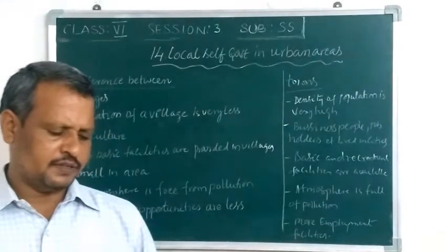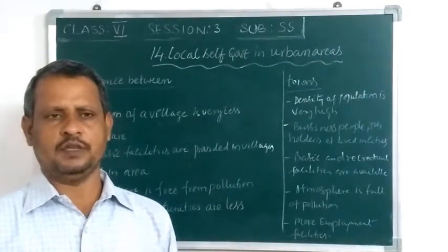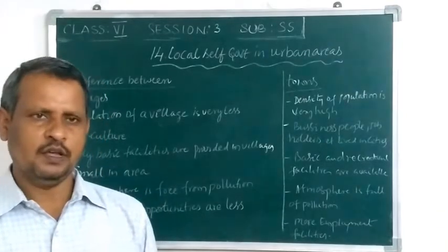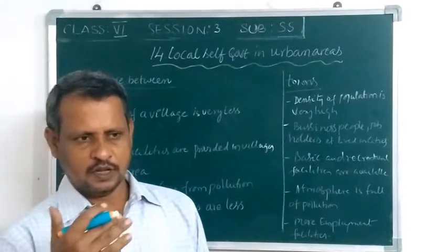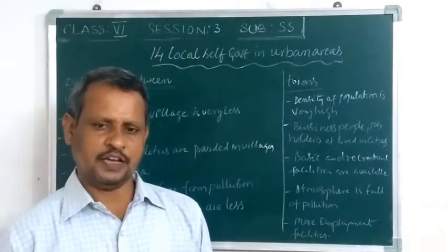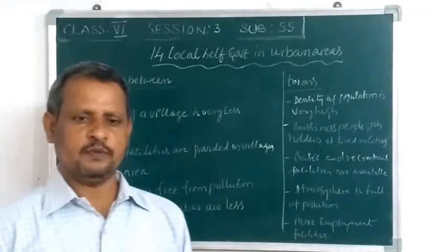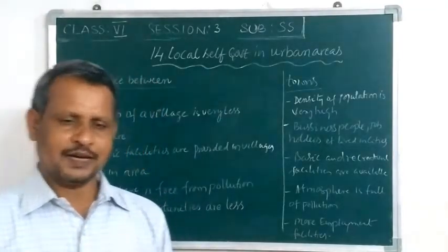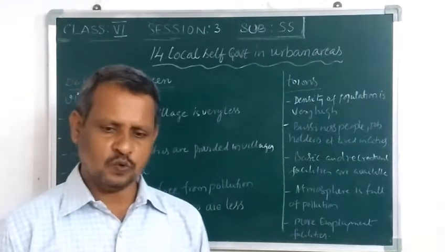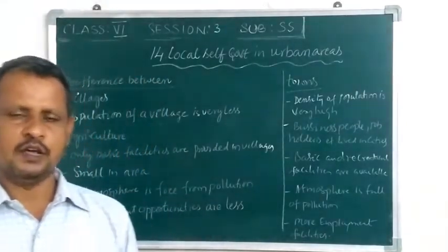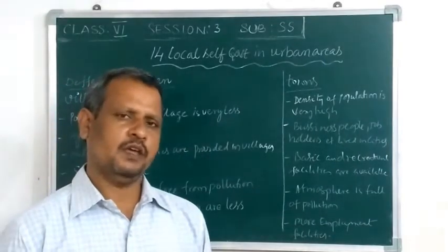A municipality is a local body with a population ranging from 40,000 to 3 lakhs. The municipality is divided into wards, wards are divided among councilors, and the head of the councilors is the chairperson. The chairperson is the head of the municipality. The municipality performs various works including construction of roads, street lighting, drinking water, schools, hospitals, and town planning.